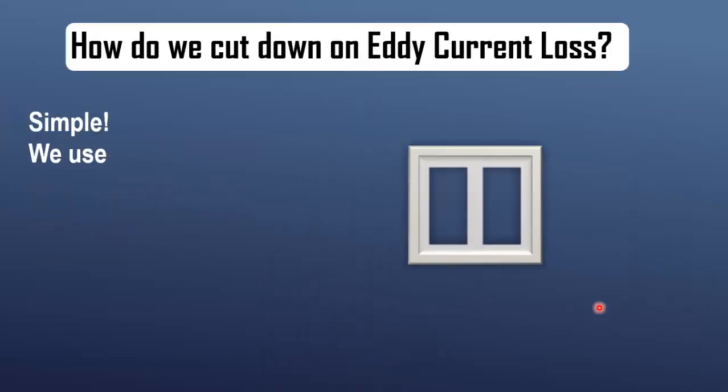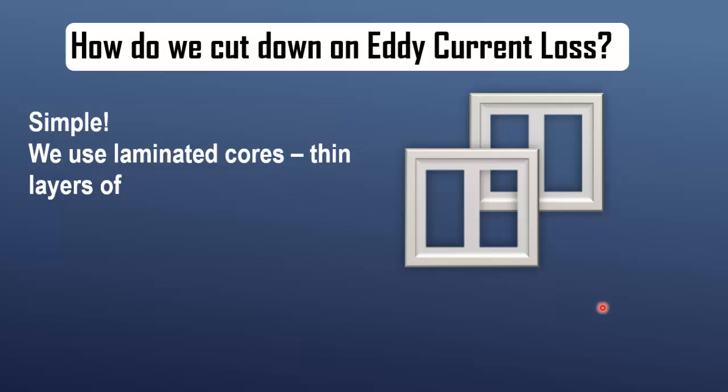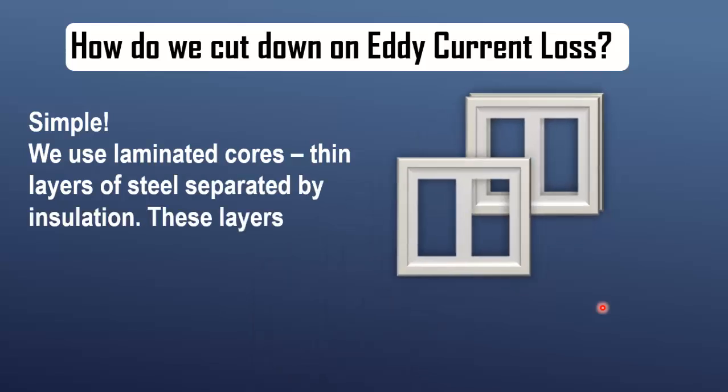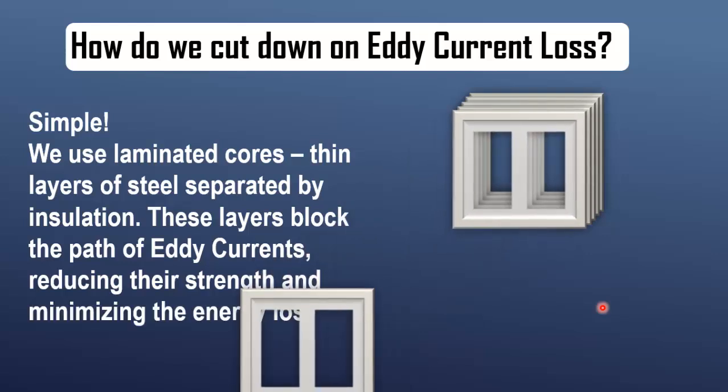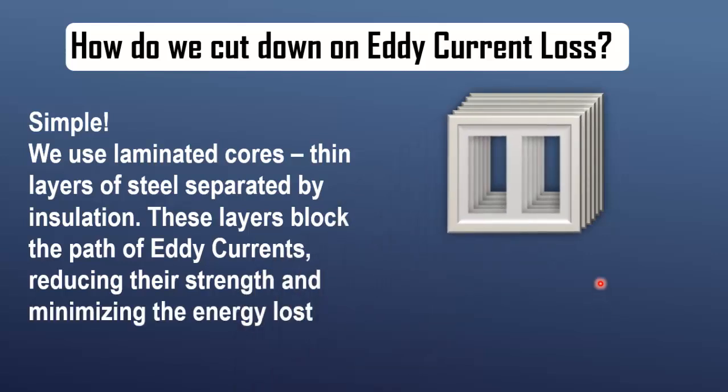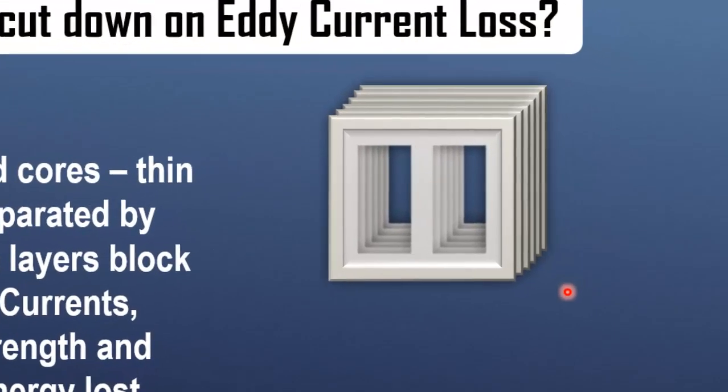Now, how do we reduce eddy current loss? Well, since these currents flow through the core material, we use laminated cores. By making the core from thin, insulated sheets, we restrict the flow of these currents, reducing the loss. So laminating the core material helps keep eddy current loss low.